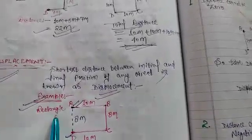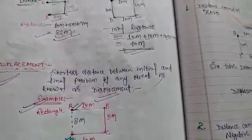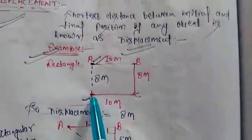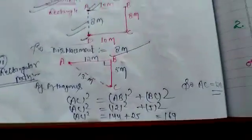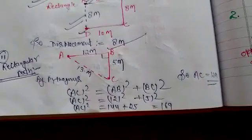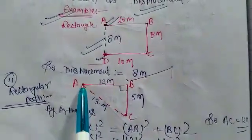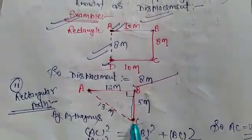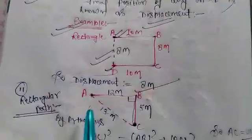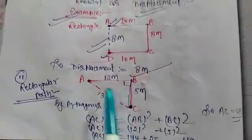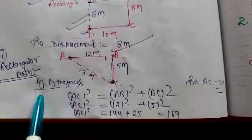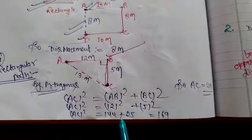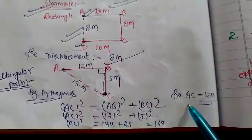Suppose the object is traveling in a rectangular path, initially at A and finally at D. The displacement is the shortest distance between the initial and final position, which is the straight line from A to D, equal to 8 meters. In another example, an object travels from A to B and B to C in a rectangular path. The distance A to B is 12 m and B to C is 5 m. To calculate displacement AC, we use the Pythagoras theorem: AC² = AB² + BC². So displacement is 13 meters.